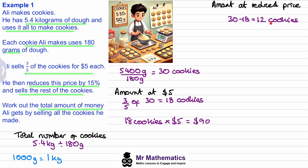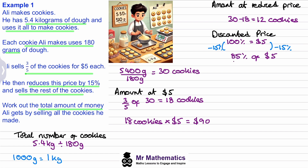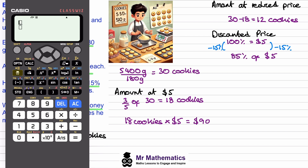Now we need to find the price at which the remaining cookies are sold. If the original price is 100 percent — that's five dollars — and we take away the 15 percent reduction, this will be 85 percent of the original five dollars. We can work this out on our calculators: percentage means out of 100, so we have 85 divided by 100, which is 0.85.